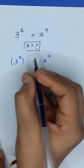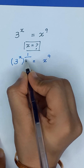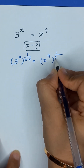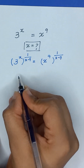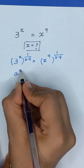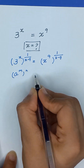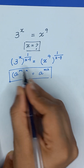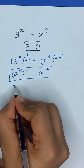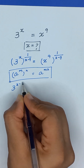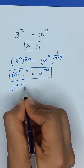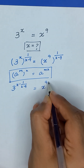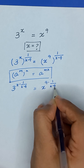In the first step, we will multiply the power 1 divided by (x times 9) on both sides. As we know that a to the power m, whole power n, is equal to a to the power mn. So our equation will become 3 to the power x times 1 divided by (x times 9) is equal to x to the power 9 times 1 divided by (x times 9).